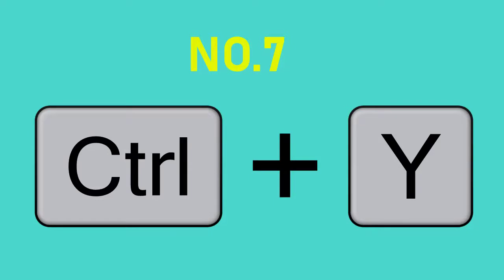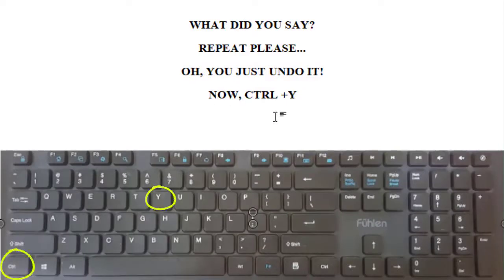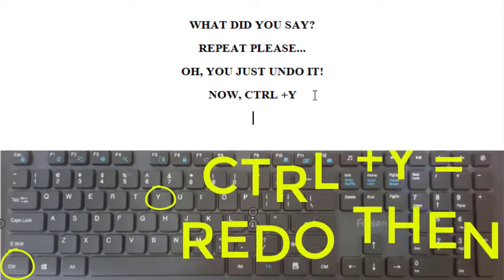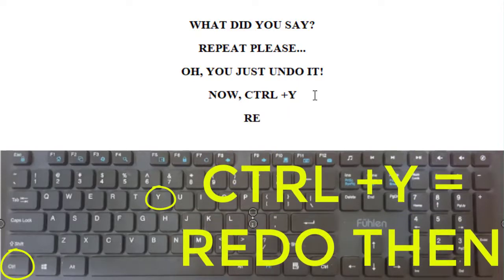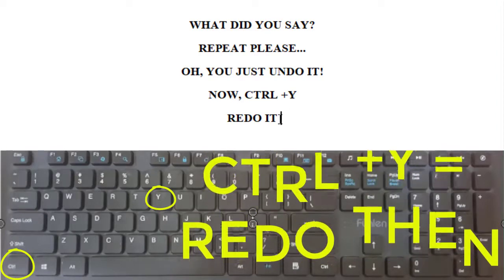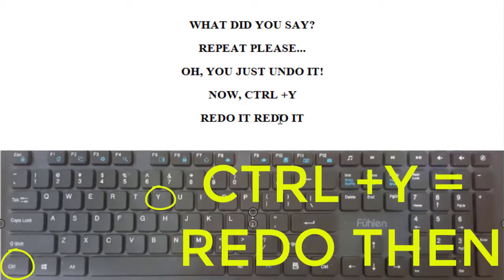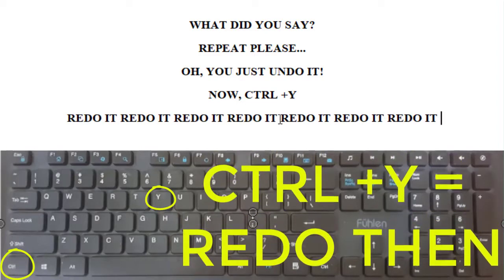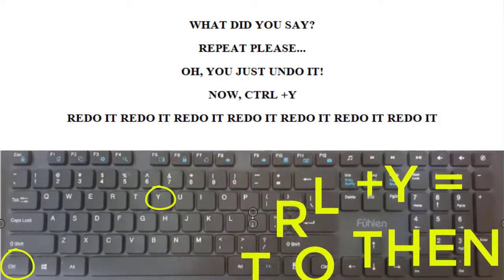Number 7: CTRL and Y — Redo. MS Word lets you both undo and redo. Redoing or repeating what you've put in a document is as easy as CTRL and Y. Why worry if you've typed something wrong? Just undo it with CTRL and Z. And if you undo something you needed, just hit CTRL and Y. As simple as that.